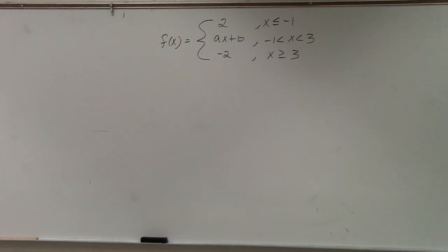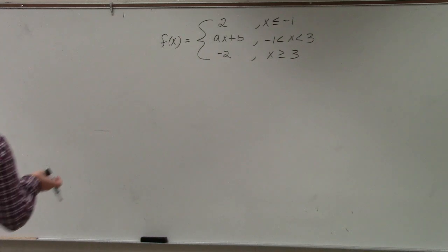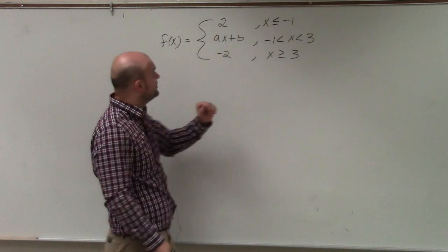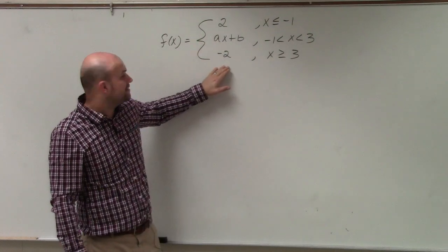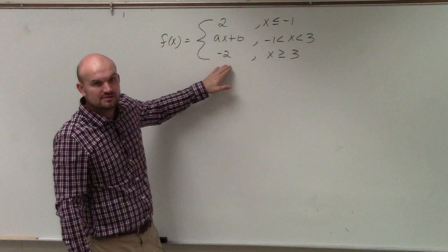Dealing with continuous functions, like in that last example, we had to evaluate that limit and make sure we understood those discontinuities. So we look at 2, AX plus B, and negative 2, and we realize that we have all three continuous functions, right?